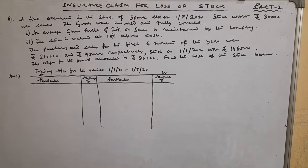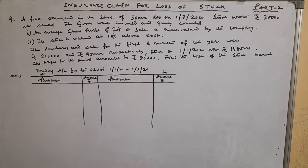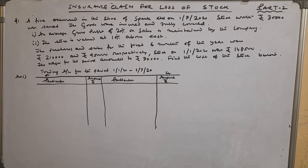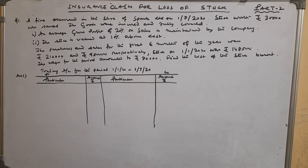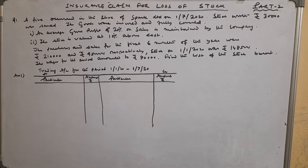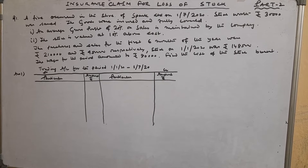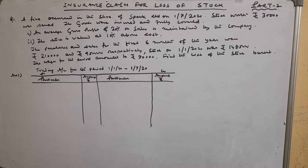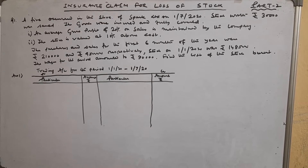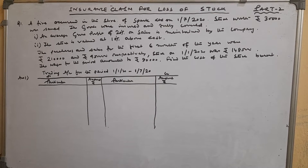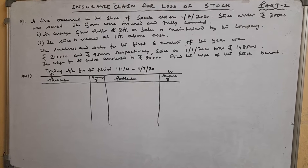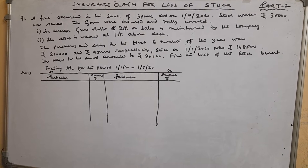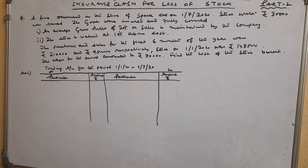Given data: An average gross profit of 20% on sales is maintained by the company. Stock is valued at 10% above cost. The purchases and sales for the first 6 months of the year were Rs. 2,10,000 and Rs. 4,50,000 respectively. Stock on 1-1-2020 was Rs. 1,48,500. Returns for the period amounted to Rs. 90,000.